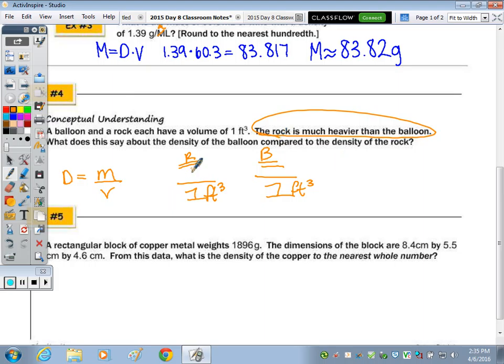Seven hundred grams for the rock. Four grams for the balloon. So the density is equivalent because you're dividing by one, so seven hundred grams per cubic feet. The density would be four grams per cubic feet. So which is the greater density? The rock. Why? Because it has the greater mass.